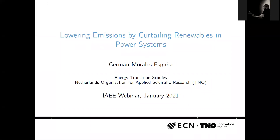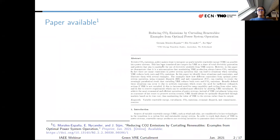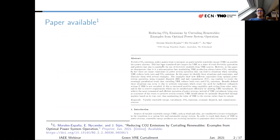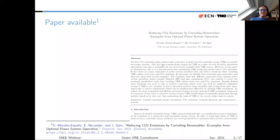The presentation is about lowering emissions by curtailing renewables in power systems. This is the result of a collaboration with two colleagues: Josiah, a colleague at TNO, and Ellis Nikander, a PhD student at KTH in Sweden who did a research stay at TNO last year. The paper is already under review and is called 'Reducing CO2 Emissions by Curtailing Renewables: Example from Optimal Power System Operation.' The slides will be shared later, including a link to the preprint.